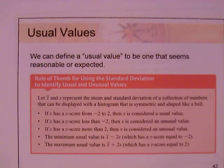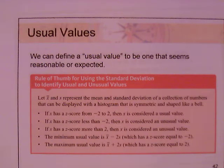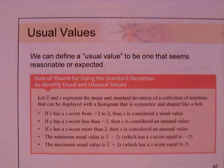The minimum usual value is X-bar minus 2 times S, which has a Z-score equal to negative 2. The maximum usual value is X-bar plus 2S, which has a Z-score equal to 2.